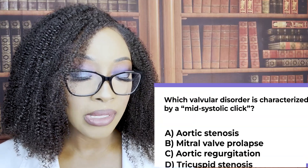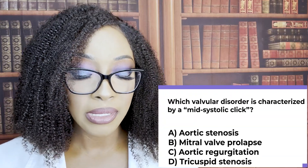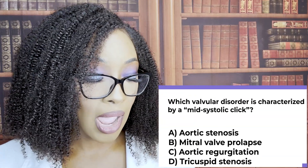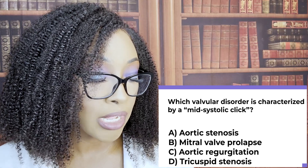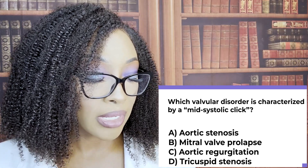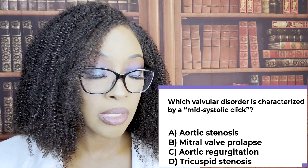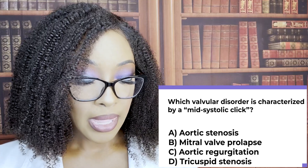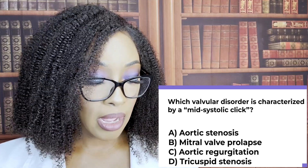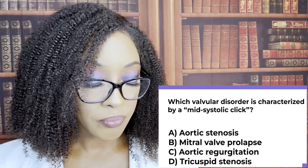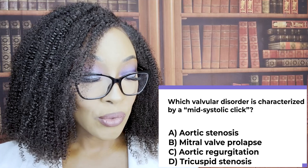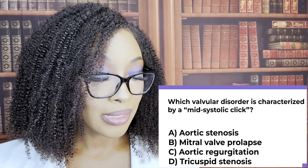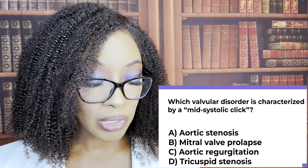Next question: which valvular disorder is characterized by a mid-systolic click? A, aortic stenosis; B, mitral valve prolapse; C, aortic regurgitation; or D, tricuspid stenosis? The correct answer is B, mitral valve prolapse. Due to the leaflets not closing the way they're supposed to, you hear that mid-systolic click. When you see that phrase, think mitral valve prolapse.